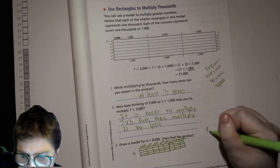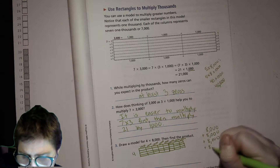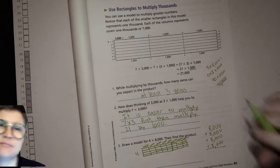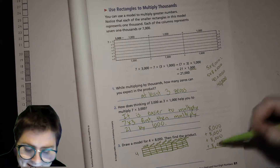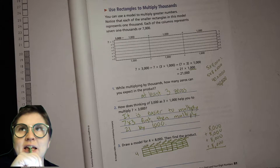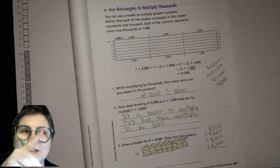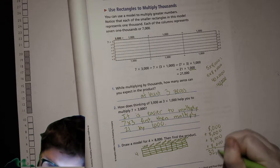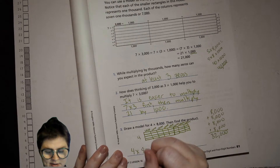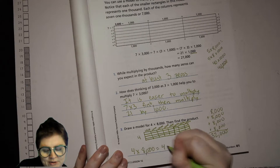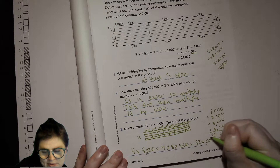So 8,000 plus 8,000 plus 8,000 plus 8,000. We can think of it as 8 plus 8 is 16, and 16 plus 16 is 32, giving us 32,000. You could also think: 4 times 8,000 equals 4 times 8 times 1,000, which equals 32 times 1,000, which equals 32,000.